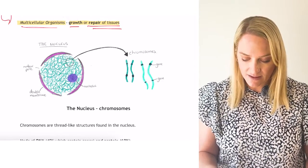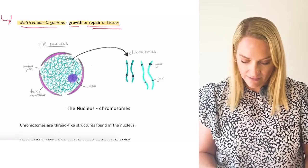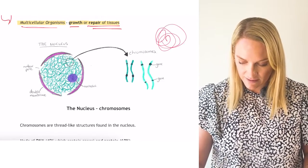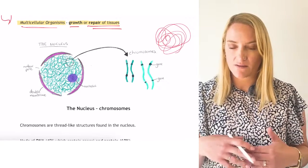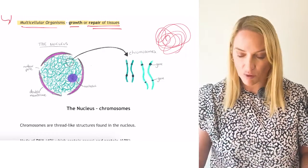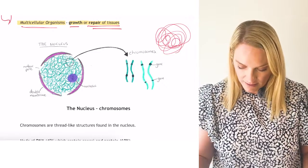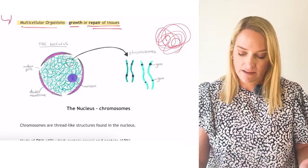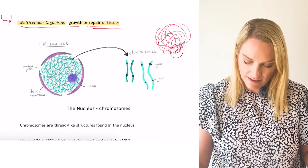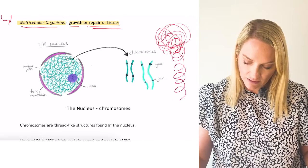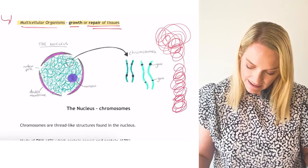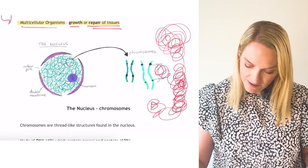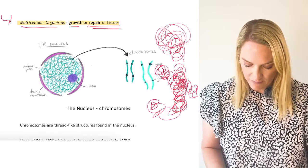Inside the nucleus we have chromatin. When the cell is not dividing, chromosomes exist as chromatin — like a ball of wool. When the cell is getting ready to divide during interphase, this chromatin will tightly condense and eventually become visible as chromosomes.